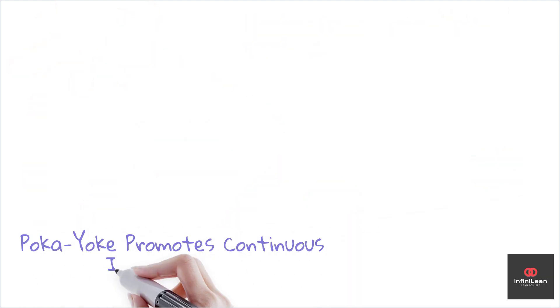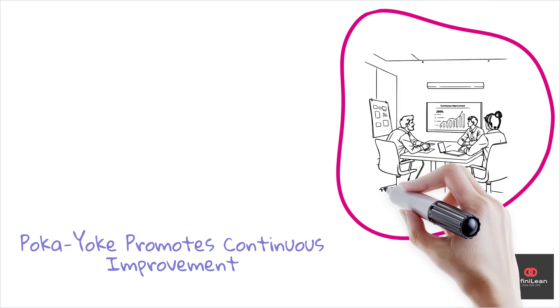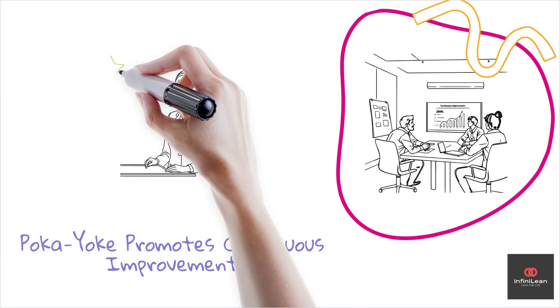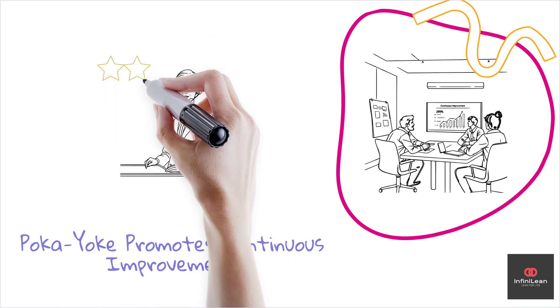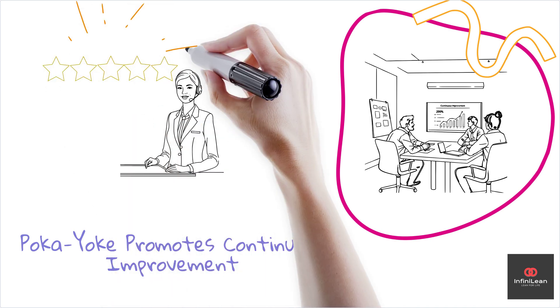In essence, poka-yoke is a critical tool within lean principles that promotes a zero-defect mindset, contributing to a culture of continuous improvement. Companies enhance product quality, customer satisfaction, and operational efficiency by focusing on mistake-proofing.